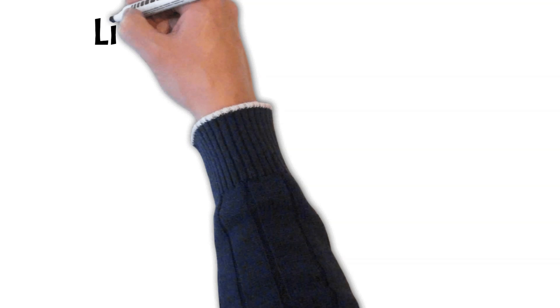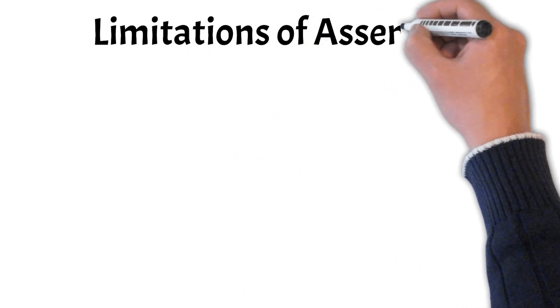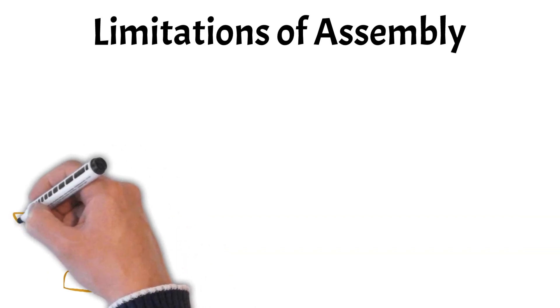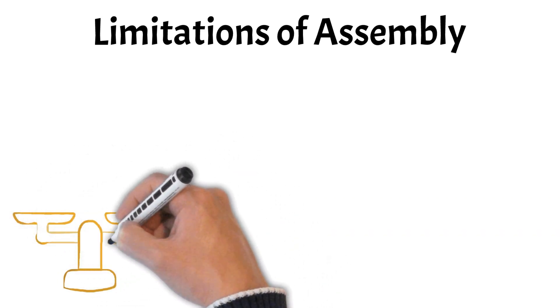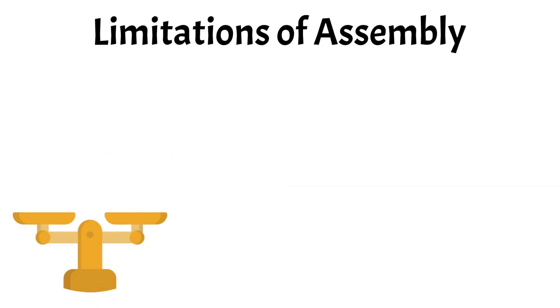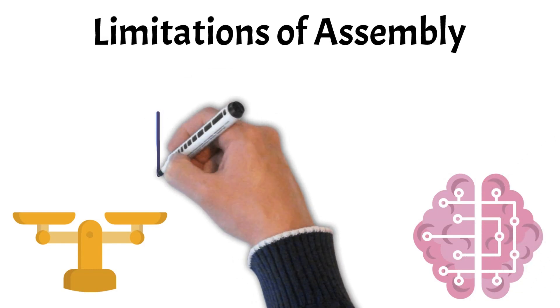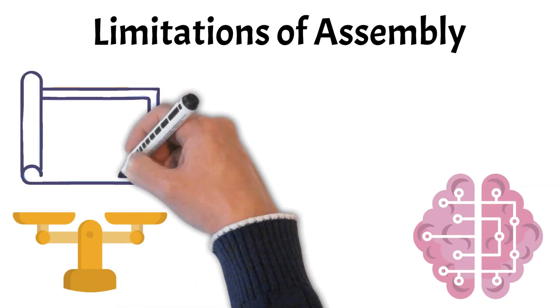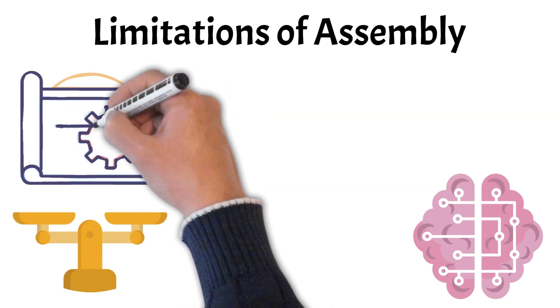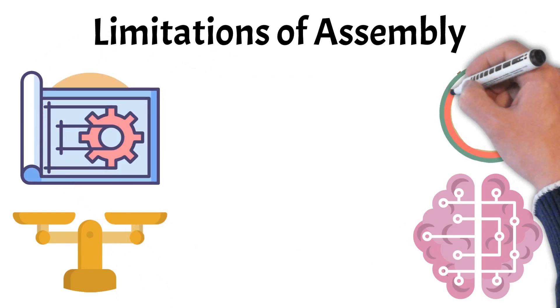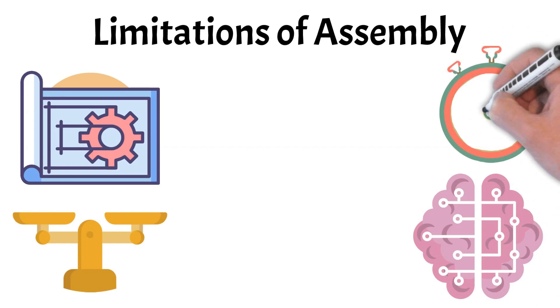Lastly, let's discuss the limitations of assembly. While assembly language offers significant advantages in terms of performance and control over hardware, it also comes with notable limitations. One major drawback is its complexity and verbosity. Writing code in assembly requires a deep understanding of the underlying hardware architecture, which can be daunting for many programmers. This complexity leads to longer development times, as even simple tasks can require extensive lines of code compared to high-level languages.